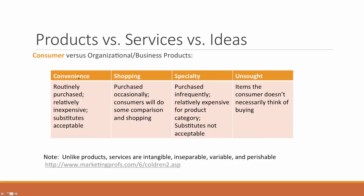Convenience products tend to be those products that are routinely purchased, relatively inexpensive, and people will readily accept substitutes if their preferred brand isn't available. Items like ketchup and toilet paper tend to be convenience products. People don't spend as much time going through the consumer decision-making process to purchase convenience products.